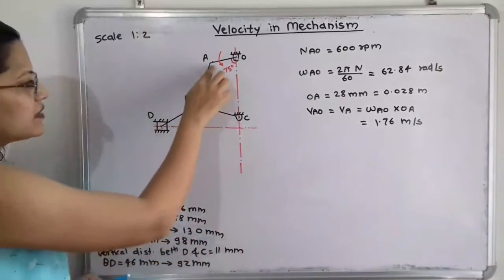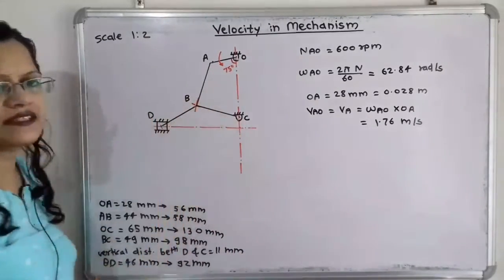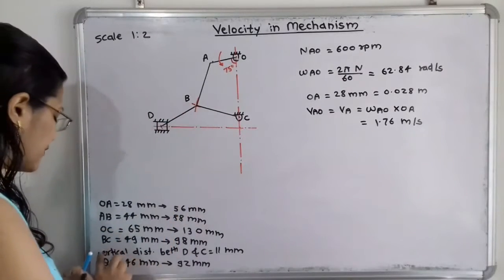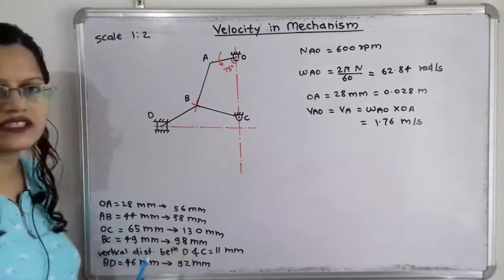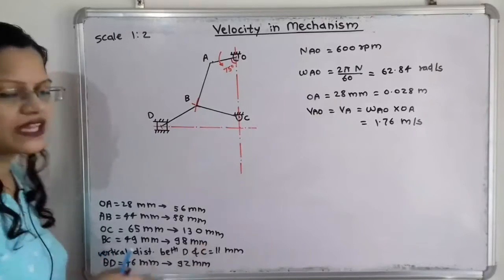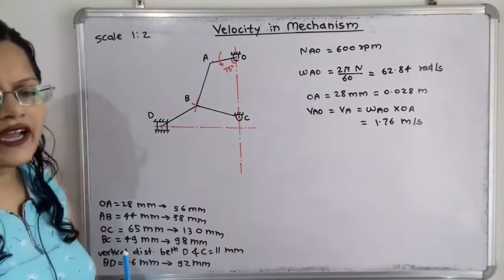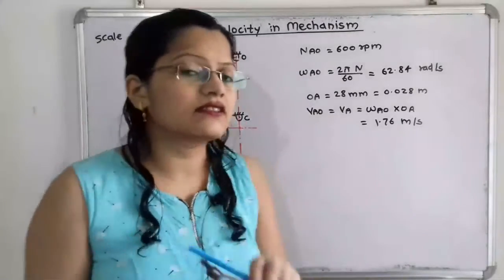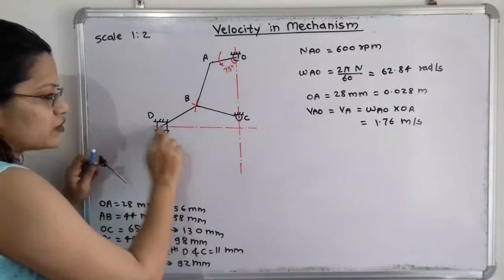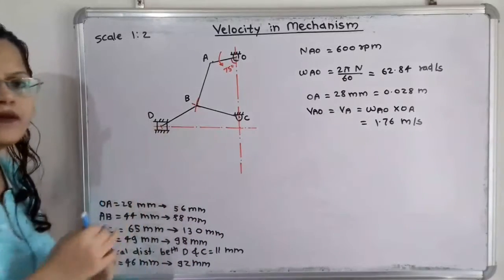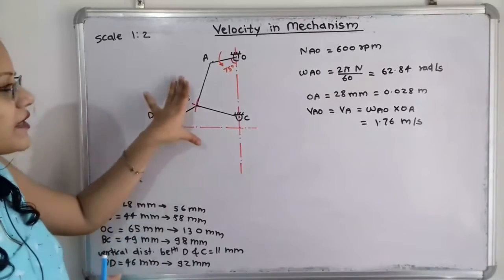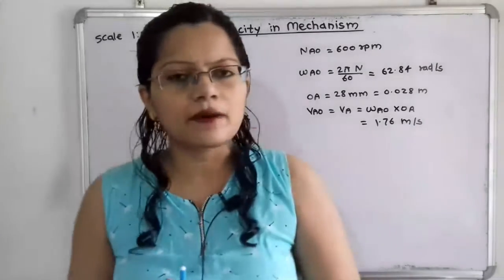Joining AB and BC gives us these two links. Now, distance BD is given as 46 mm, so as per scale 1 is to 2, we take 46 × 2 = 92 mm. In the compass, we take 92 mm with B as center, and the point of intersection on the horizontal slider path gives us point D — the position of the slider. In this way, the space diagram is completed.